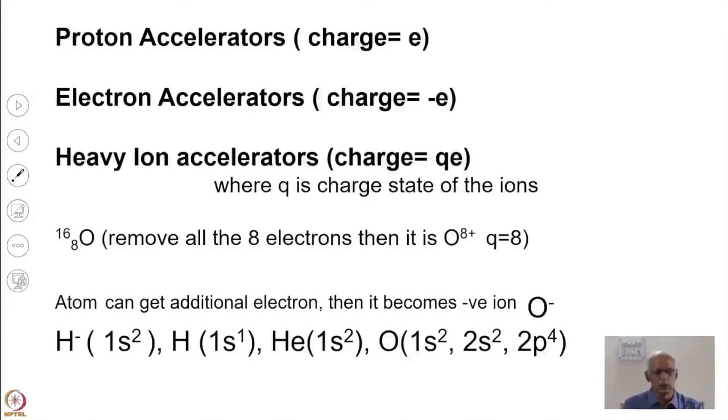For positive ions, it is easy to remove electrons. Suppose you take oxygen-16, which has 8 electrons, remove all the 8 electrons, then it will be oxygen 8 plus. So Q becomes 8 times. So energy in the case of tandem or pelletron will be 1 plus 8 means 9 times of the voltage.